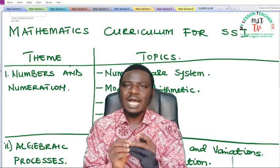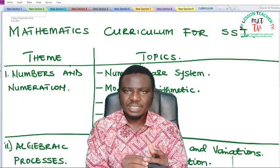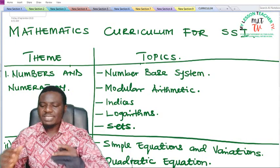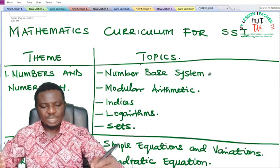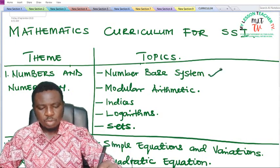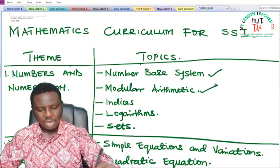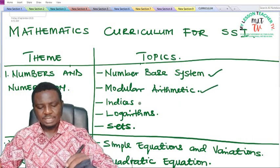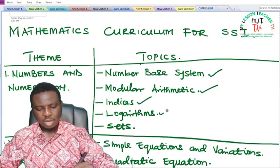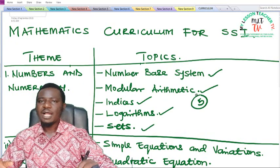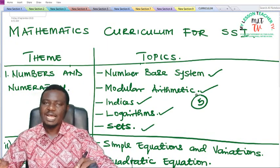So we shall be looking at the topics for each of these themes. Under numbers and numeration we now have topics like number base systems, modular arithmetic, indices, logarithms, and sets — making it a total of five topics under numbers and numeration.